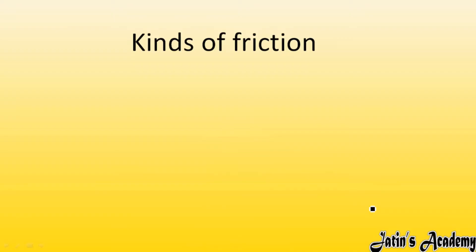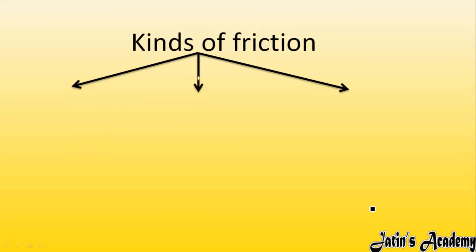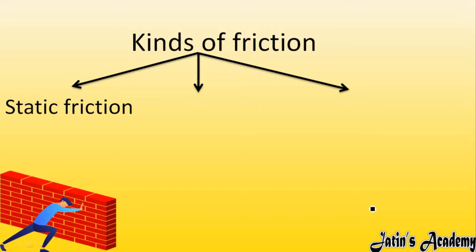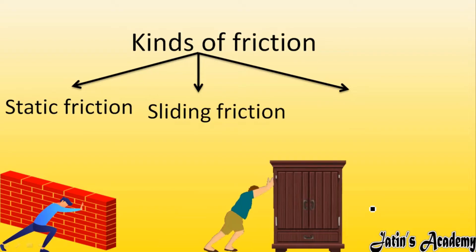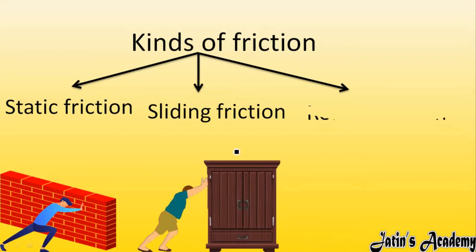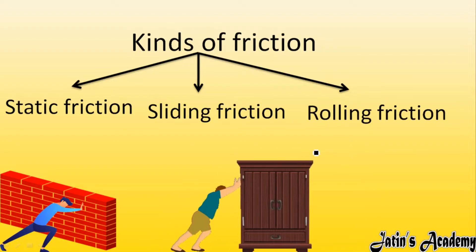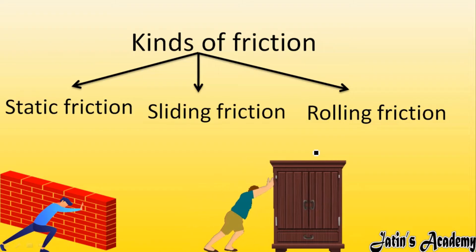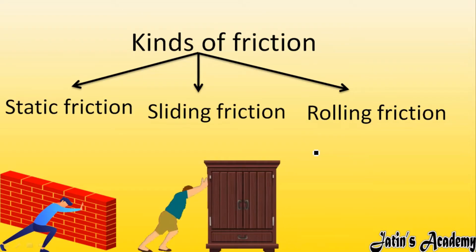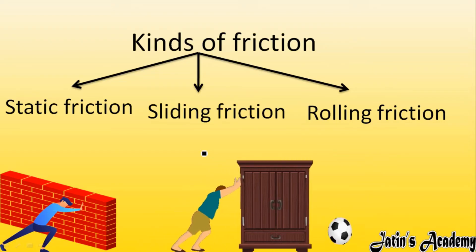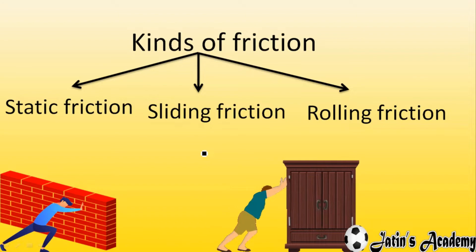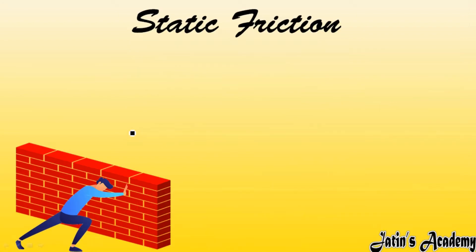Next, we are having three kinds of friction. First, we are having static friction. Next, we are having sliding friction. Then we are having rolling friction. So one by one, we are going to discuss all three kinds of friction: static friction, sliding friction, and rolling friction.